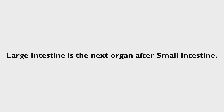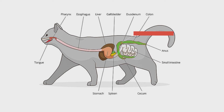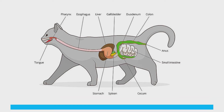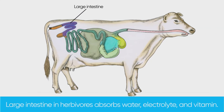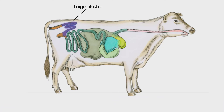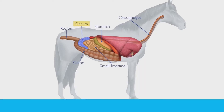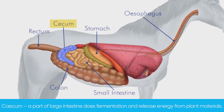After the small intestine, the large intestine is the next organ. In carnivores like cats, the large intestine is simple and short, as its only purpose is to absorb salt and water. Whereas in herbivores like cows and goats, the large intestine is highly specialized, longer and complex, and absorbs water, electrolytes and vitamins. It also helps in fermentation. In some animals like horses, the cecum, a part of the large intestine, helps in fermentation and releases energy from plant materials.